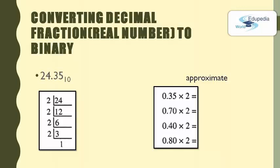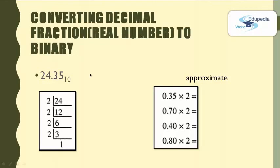Now we have a real number with both an integer part and a fractional part. To convert 24.35 to binary, find the binary equivalents of the integer part and fractional part separately, then write them side by side. For the integer part 24: 24÷2 quotient 12 remainder 0; 12÷2 quotient 6 remainder 0; 6÷2 quotient 3 remainder 0; 3÷2 quotient 1 remainder 1. Writing remainders in reverse: 11000. Then we place the binary point.